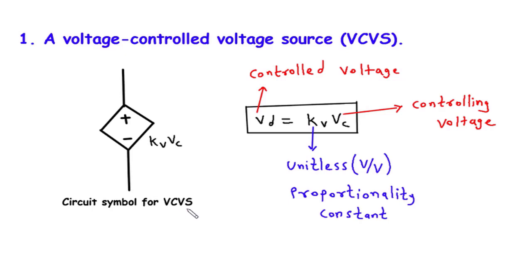The VCVS finds extensive applications in various electronic systems. One common application is in amplifiers. By using a VCVS, we can control the amplification of signals based on the controlling voltage. This allows us to adjust the volume or gain of the amplifier according to our needs. The VCVS is also used in oscillators, which generate periodic waveforms. By controlling the voltage that determines the frequency of the oscillator, we can produce different tones and frequencies in electronic music or signal generation.